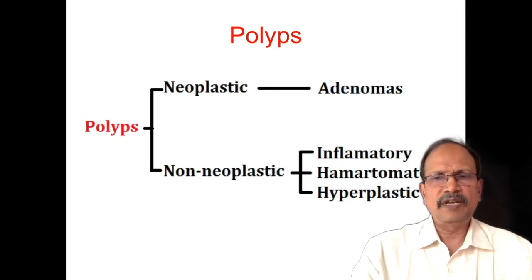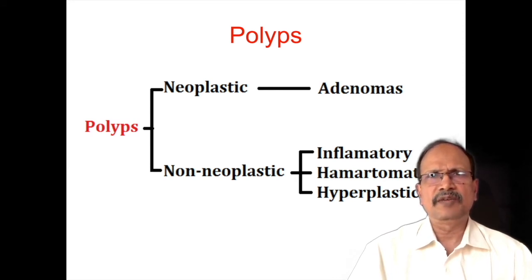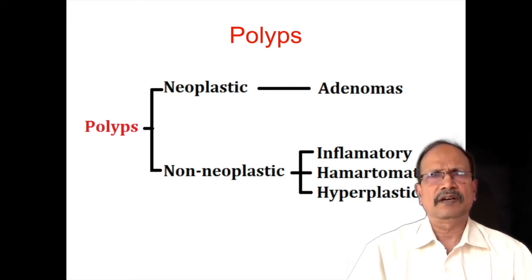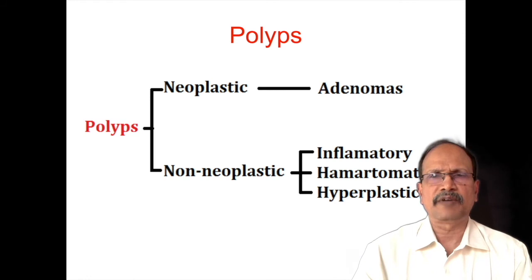Polyps of the GIT can be classified mainly into neoplastic and non-neoplastic polyps. Neoplastic polyps are equated with adenomas — again, adenomas of GIT require the qualifier of dysplasia, whereas adenomas in other parts of the body do not have this requirement. Non-neoplastic polyps can be due to inflammation (inflammatory polyp), hamartomatous polyp, or hyperplastic variety of polyps.